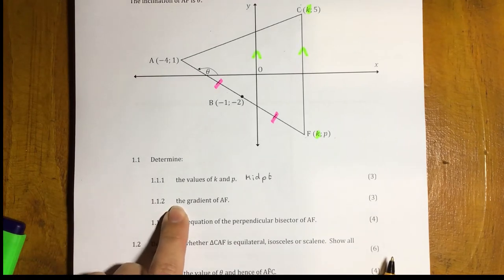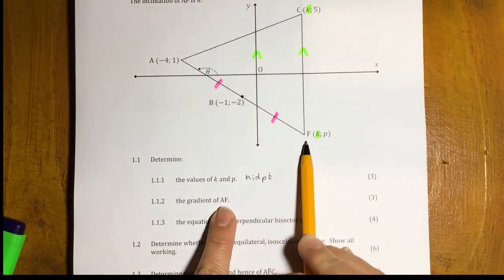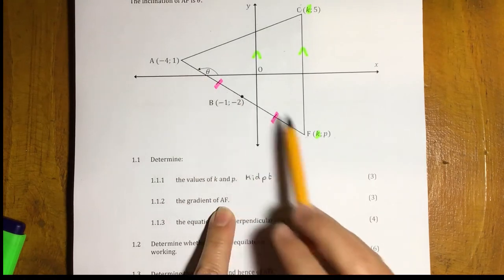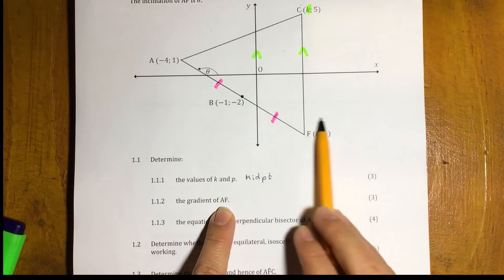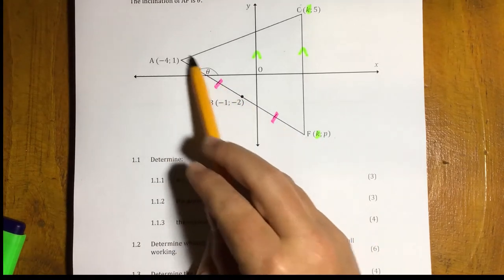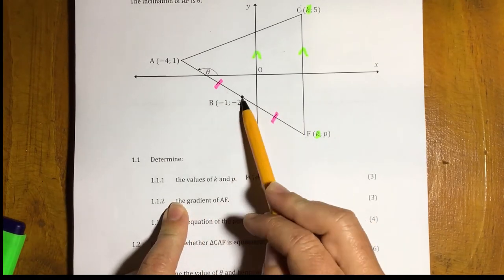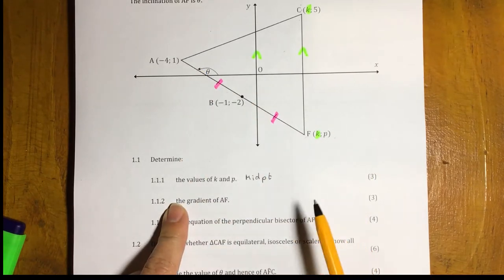Second question. The gradient of AF. So, we want this gradient here. Now, if you've worked out F, then it's straightforward on how to calculate that. But if you have struggled to work out F, look to see if there's another point on that line that you can use to work out the gradient. And as you can see, we've got a point B. So, we can use point B to work out that gradient instead.